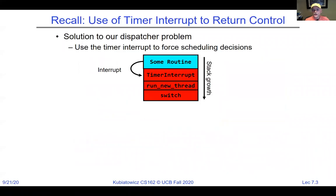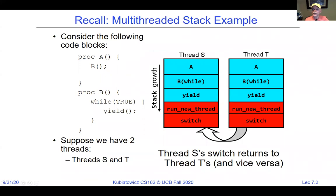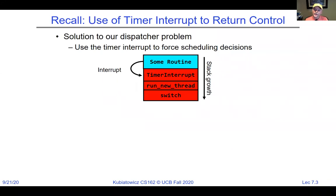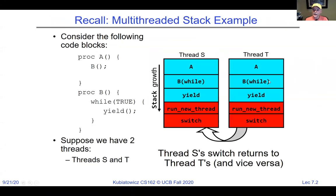The timer interrupt is a solution to our dispatcher problem — what happens if one of these threads goes into an infinite loop and never calls yield? Even if the blue routine is busy in an infinite loop, the interrupt comes along, takes us into the kernel stack, and then we can just run run_new_thread and switch. If T is doing an infinite loop and not yielding, the interrupt will force us into run_new_thread switch and switch over to S, giving each thread fair use of the processor.